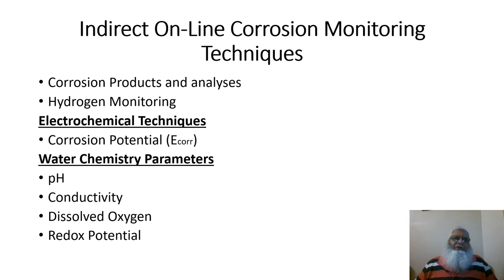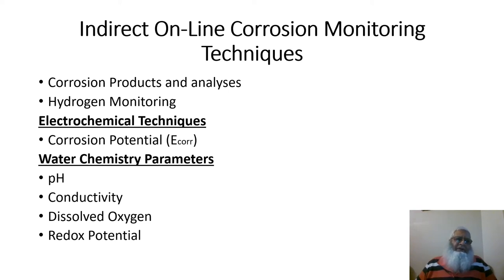This slide shows indirect online corrosion monitoring techniques in common use in oil and gas facilities, including corrosion products and analysis, hydrogen monitoring, electrochemical techniques based on corrosion potential measurement (ECOR), and water chemistry parameters such as pH, temperature, conductivity, dissolved oxygen, and redox potential.